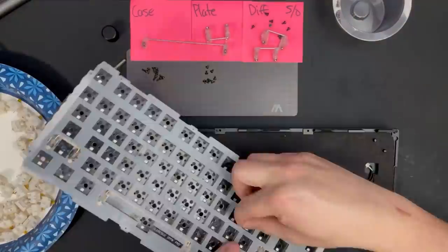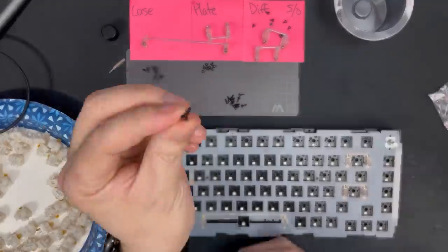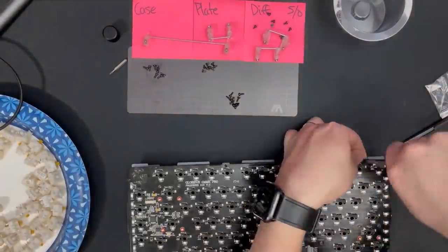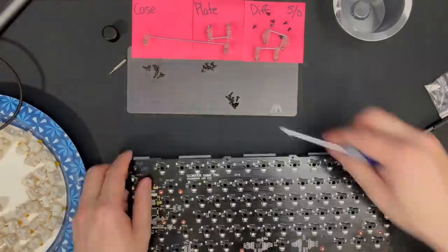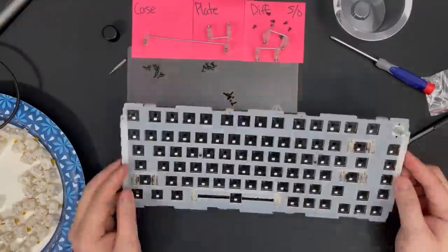Also, my Wowstick didn't have enough torque to screw these in, so we'll need to bust out the old manual muscle here. I used all eight plate screws and reused the standoffs since the stiffer plate works well with tactile switches, but you can leave out the standoffs and use fewer plate screws or even only the diffuser screws if you want a softer plate.